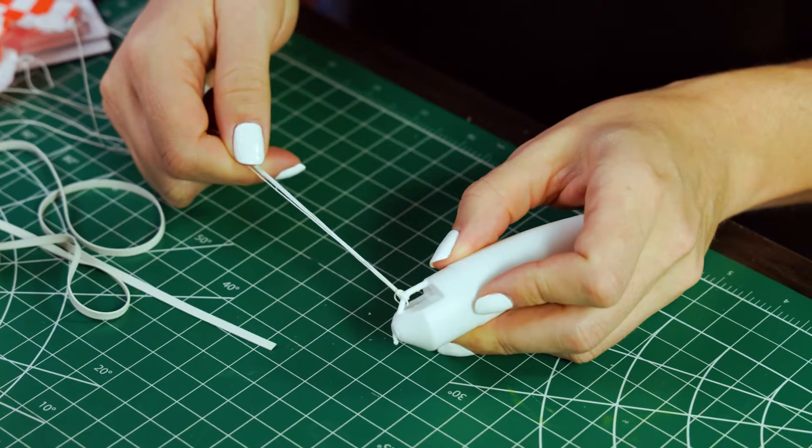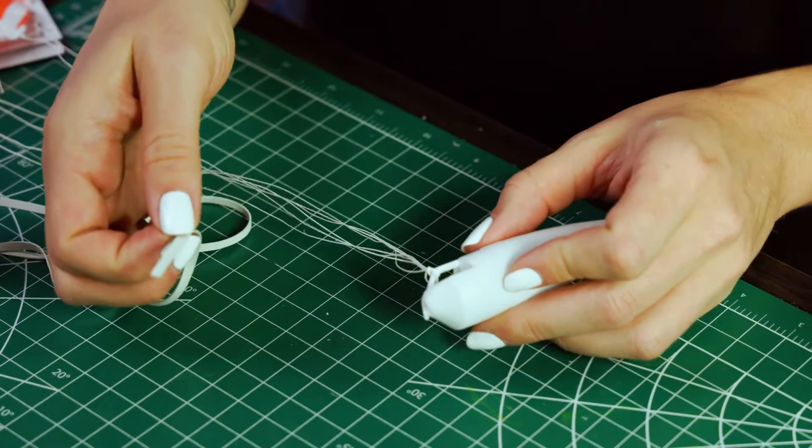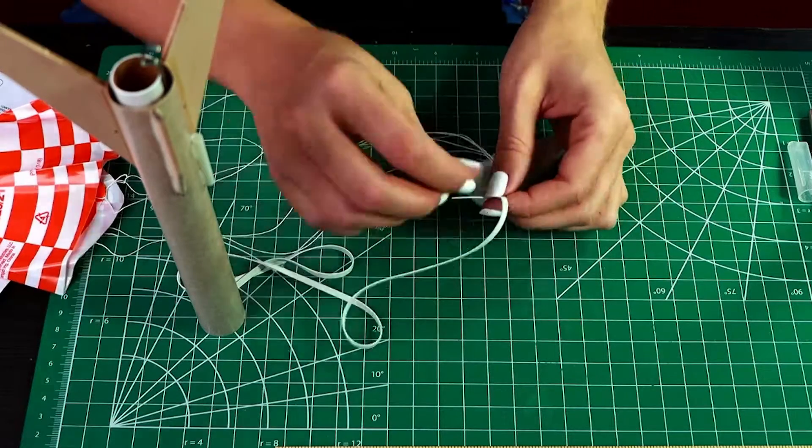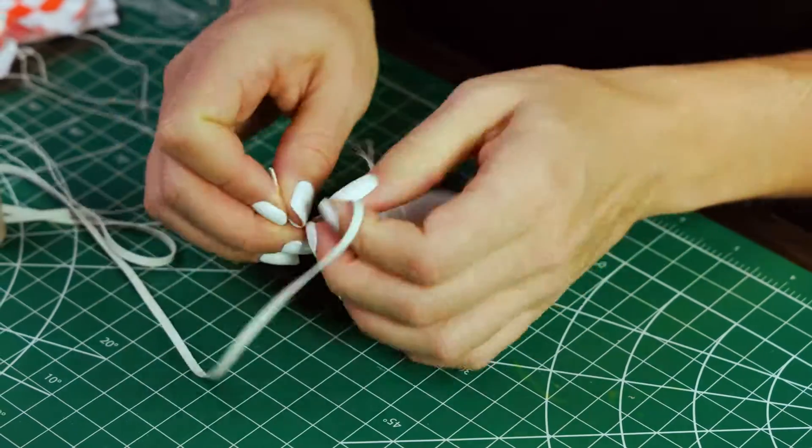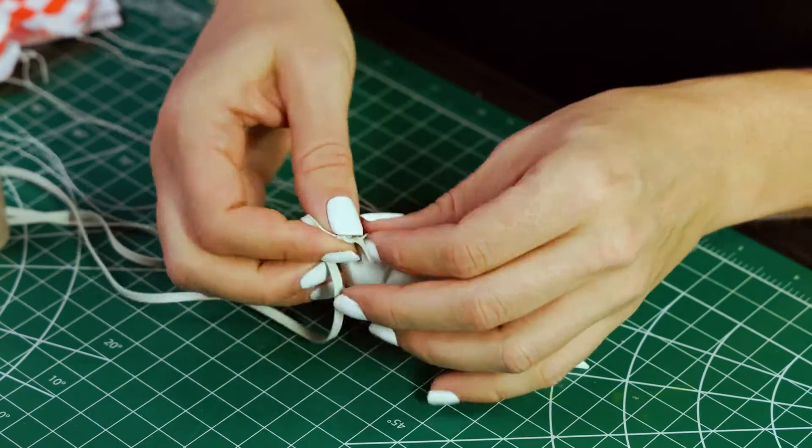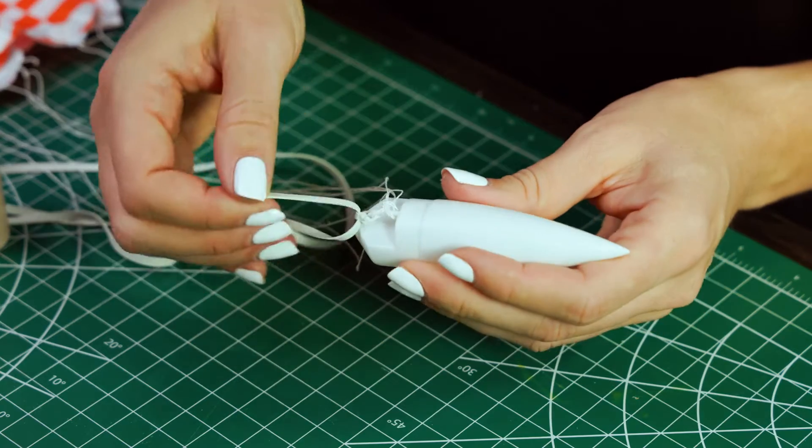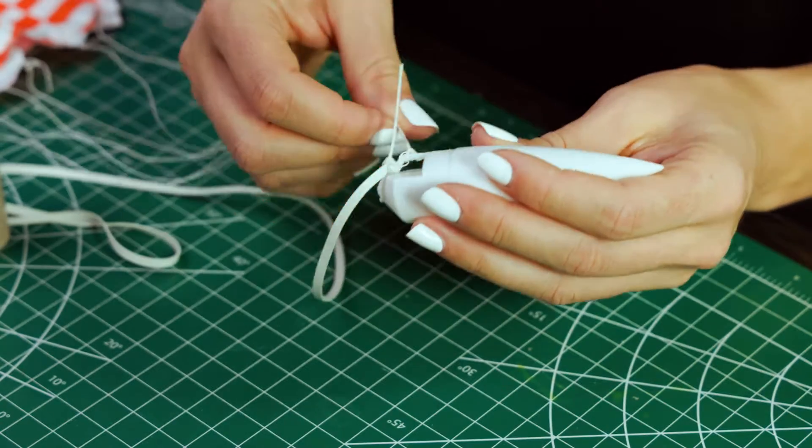So now we have our parachute attached, and then we're just going to attach the shock cord by doing a double knot on there. Okay, so those are good. If you have some extra, you can trim that if you want to, but it should be fine.